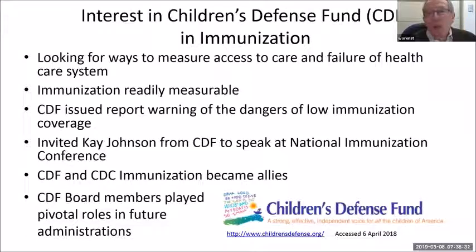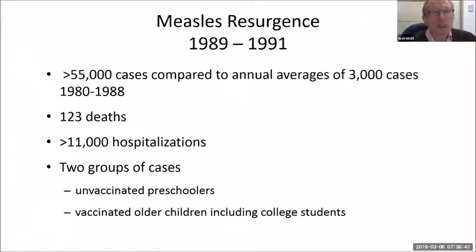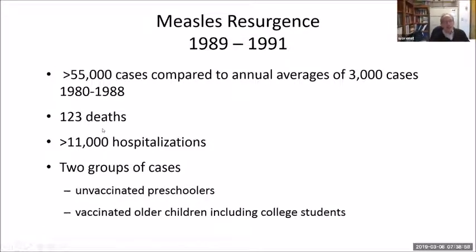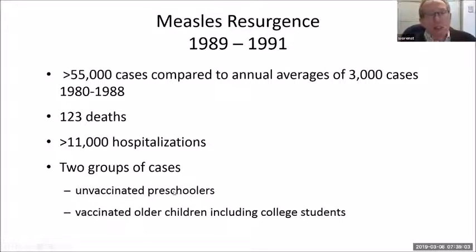Hillary Clinton was on the board of the Children's Defense Fund, and when she became first lady of the United States, another presidential initiative followed. What helped spark it was a major measles resurgence between 1989 and 1991, with over 55,000 cases compared to the prior annual average of 3,000, resulting in 123 deaths and over 11,000 hospitalizations. The two groups most affected were unvaccinated preschoolers and one-dose college students.